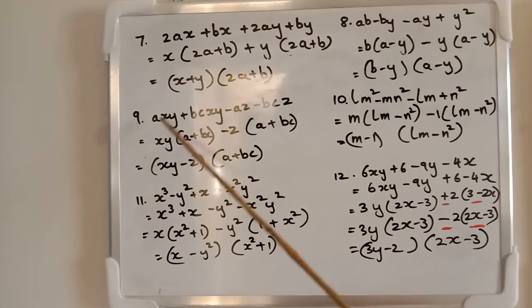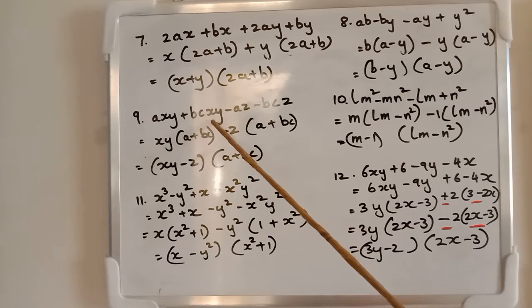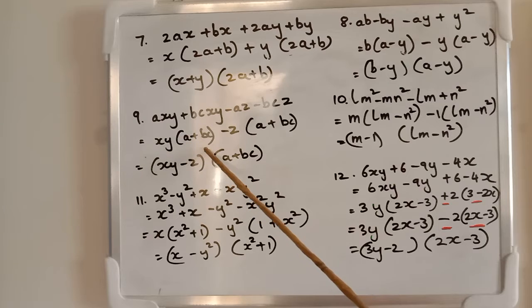Next 9th: axy + bcxy. What's common here? xy. xy out, a + bc inside.